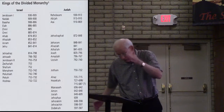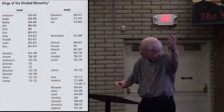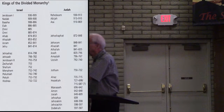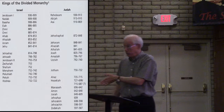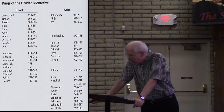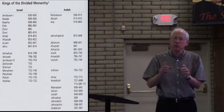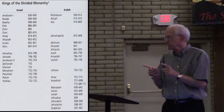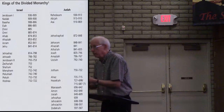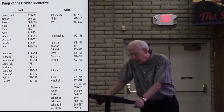The lengthy co-regency at the beginning is explained by Amaziah being taken to Samaria. The lengthy co-regency at the end is because Uzziah was struck with leprosy. Like other Judean kings, he began well in the faith but did not finish his life with the same degree of faithfulness.